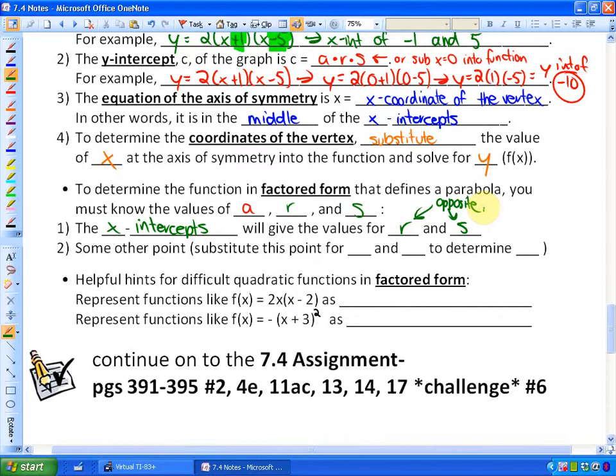And some other point - substitute this point for x and y. You can use any other point that's on that parabola, any other information besides the x-intercepts, and substitute that point in for x and y to determine the coefficient a.